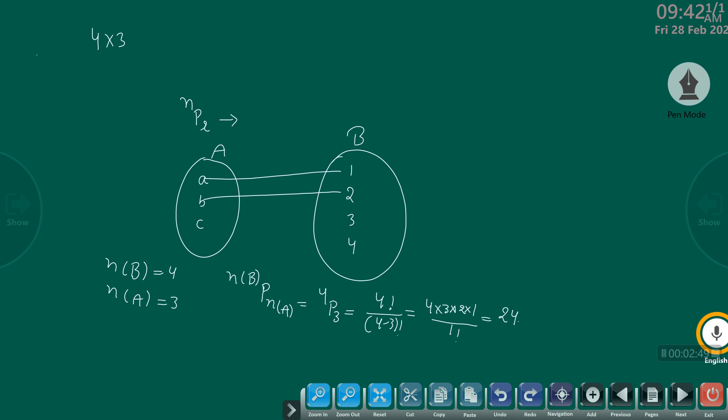Suppose B connects to 2. Now C has how many choices? Two. So the multiplication is equal to 4 times 3 times 2. That is the formula.